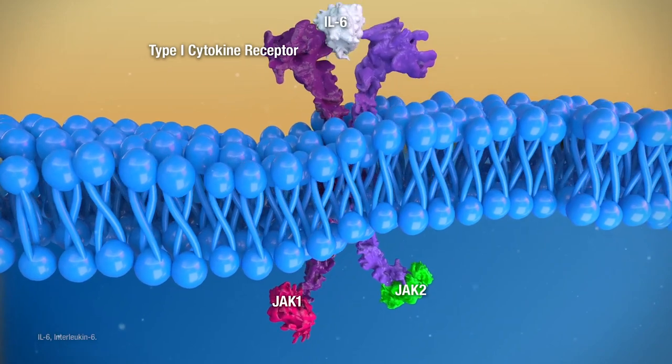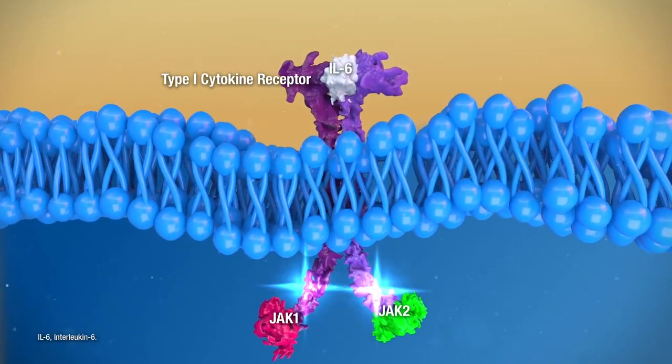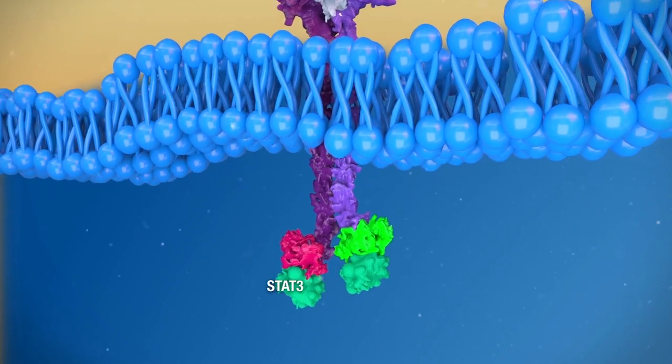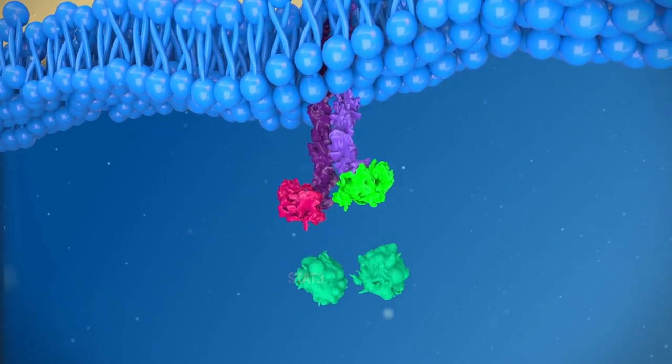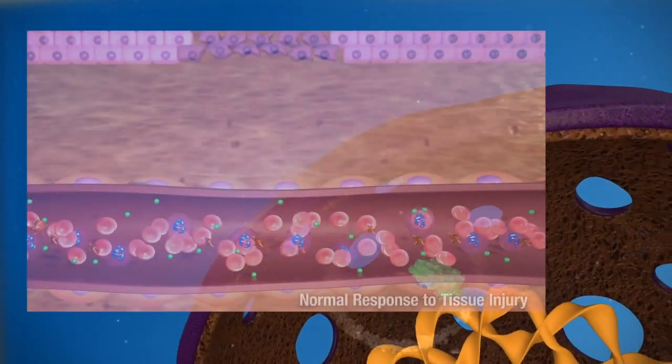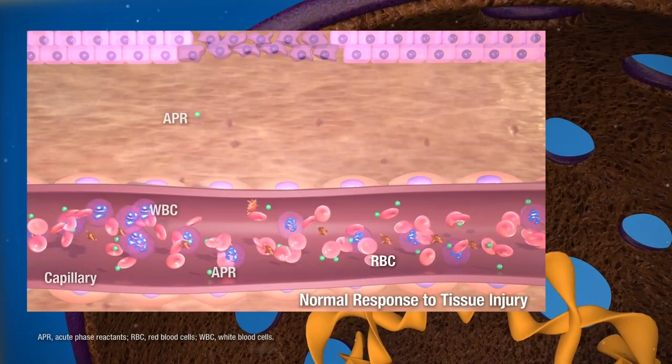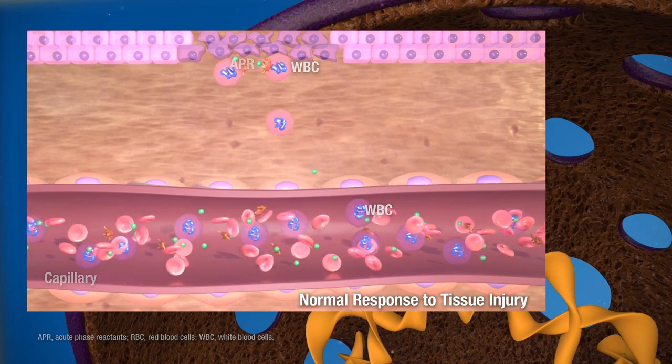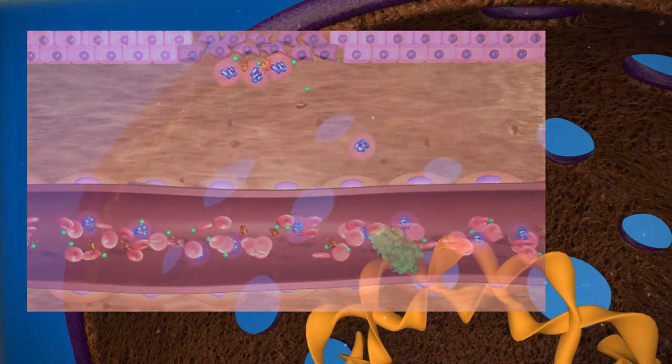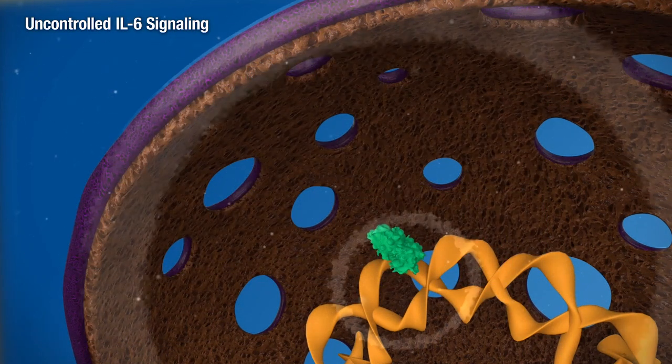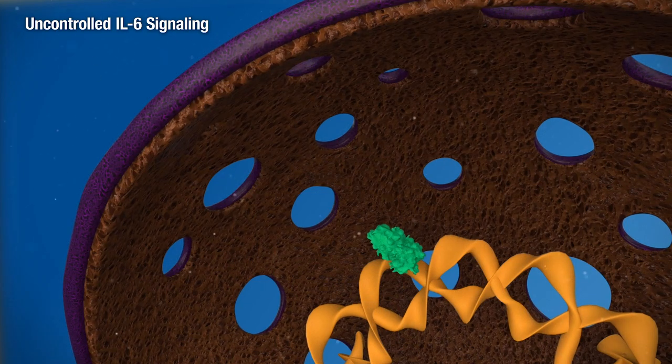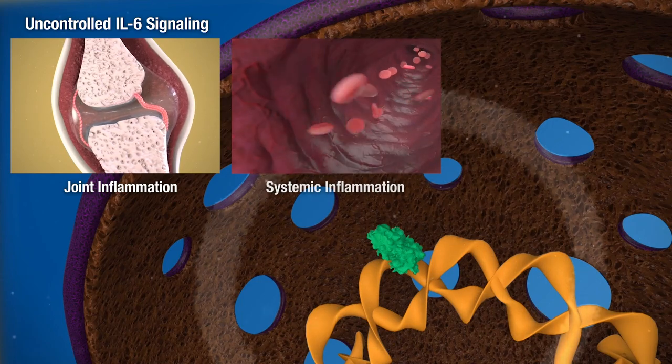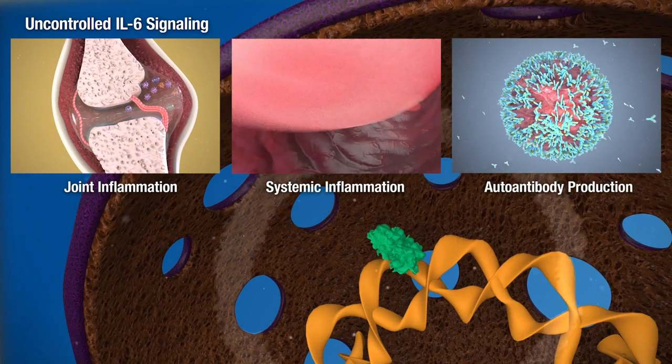Similarly, after binding to its receptor, interleukin-6 activates JAK1 and JAK2, which then phosphorylate STAT3. STAT3 dimers translocate to the nucleus and stimulate the transcription of several genes involved in acute phase reactions, or immunologic and hematopoietic responses to infection and tissue injury. Uncontrolled and persistent IL-6 signaling, however, contributes to local inflammatory environments in the joints, systemic inflammation, and auto-antibody production.